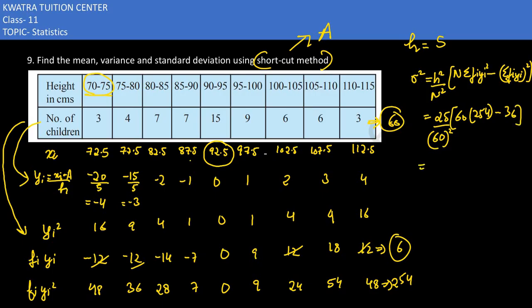Now simplify this to get the value. 25 over 60² is 3600. 60 into 254 minus 36: 60 into 254 is 15,240 minus 36 is 15,204. So it would be 15,204 multiplied with 25, then divided with 3600. So approximately our answer is 105.58.